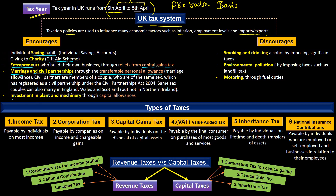The tax system also encourages investment in new plant and machinery by giving capital allowances. On the other hand, UK taxation system discourages few things such as smoking and drinking, environmental pollution, and motoring by imposing some taxes and duties. For example, in the case of environmental pollution a landfill tax can be imposed, and in the case of motoring some fuel duties can be imposed.